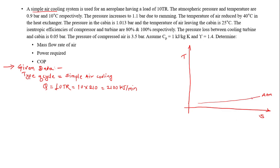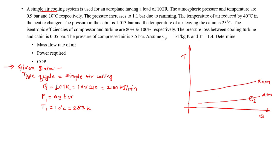On the atmospheric pressure line I mark point number 1, where P1 = 0.9 bar and T1 = 10°C = 283 K. The pressure increases to 1.1 bar due to ramming, and the process from 1 to 2 is isentropic, giving point 2 at P2 = 1.1 bar. Since no ramming efficiency is mentioned, there is no need to show an actual point — it remains point 2 only.